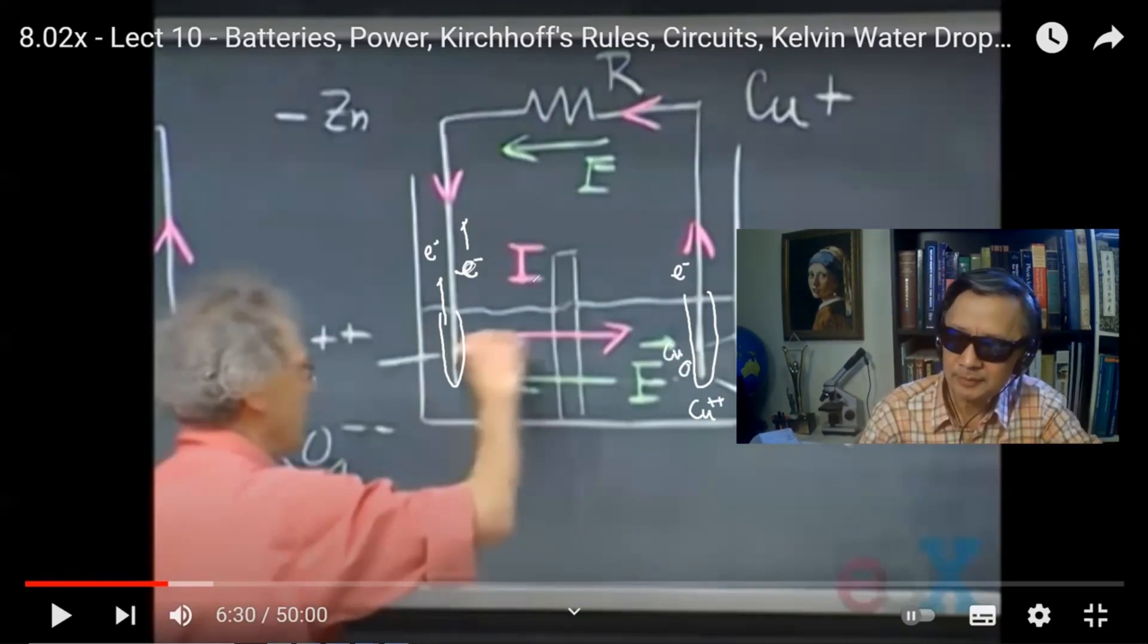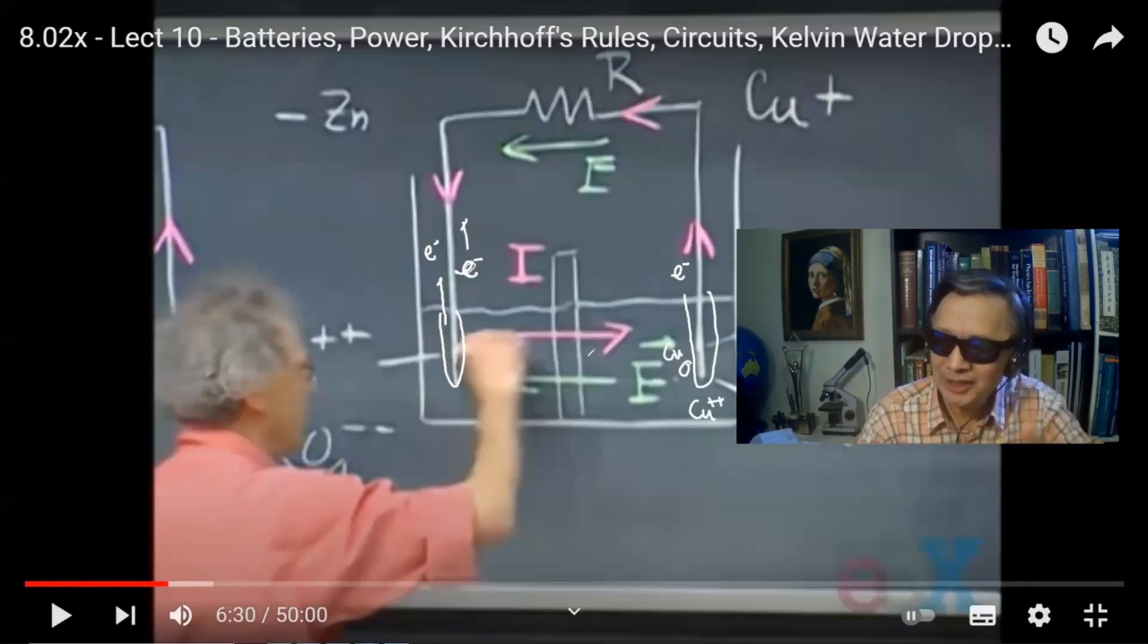So the current is formed externally by the running electron. It has nothing to do with internal diffusion of ions on both sides.